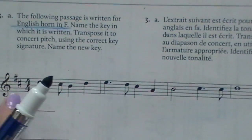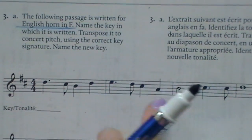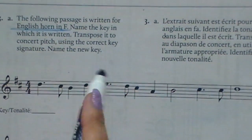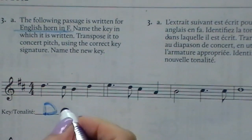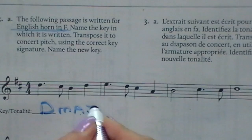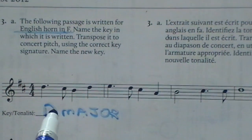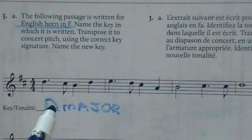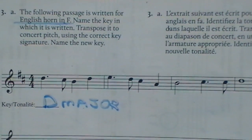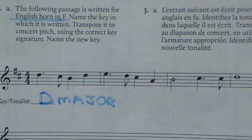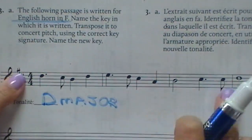Let's first name the key. We see two sharps — Father Charles. There are no accidentals, so we're safe to say this is in D major. This piece is written in D major and it is written for the French horn. So when the French horn in F is playing this piece, it will sound exactly a perfect fifth lower than what is written here.